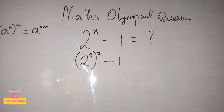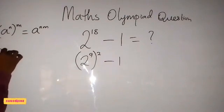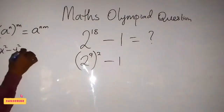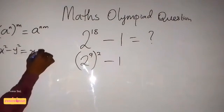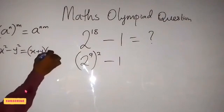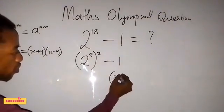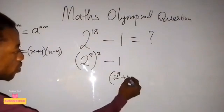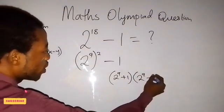Then from here we apply what is called difference of two squared. So when we have x squared minus y squared, this will give us x plus y times x minus y. So let's apply that here. 2 raised to power 9 plus 1 times 2 raised to power 9 minus 1.